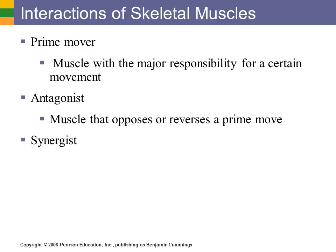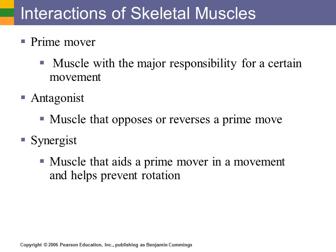A synergist is a muscle that assists the prime mover in whatever action it is. For example, if you flex your biceps with your palm in supination — palm forward in anatomical position — the biceps brachii is the main muscle. But if you take your palm and turn it down into pronation and try to do the same motion, another muscle called the brachialis becomes more dominant. The brachialis assists that movement because in pronation the prime mover doesn't get a good pull on the bones, so it needs a helper muscle.